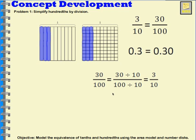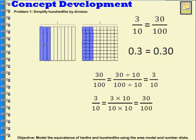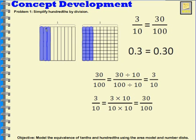Now I can also reverse this and do it the other way. If I wanted to start with three tenths, I can make that look like thirty hundredths, but not through division — I would have to use multiplication. I'm multiplying by ten, so basically I'm drawing the horizontal lines on the model, taking each one-tenth piece and separating it into ten parts.